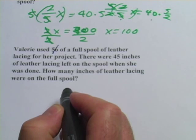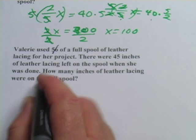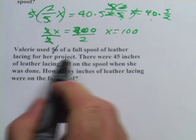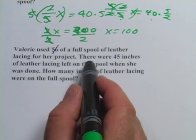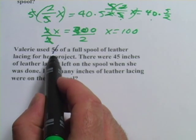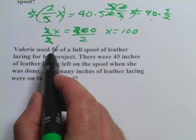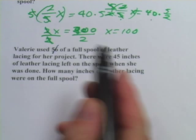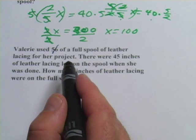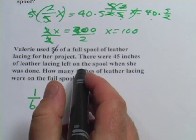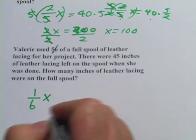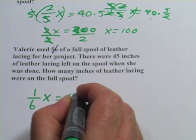They still want to know what the full spool is. So five-sixths. Oh, I see. So what that means is that if there are 45 inches left, that's the part of the fraction she didn't take. That would be the one-sixth that's left on the spool. Because a full spool would be like one, and one minus five-sixths would be one-sixth. So this would be one-sixth of the full spool. So one-sixth times X is 45 inches.